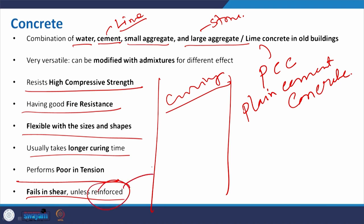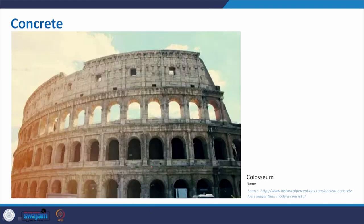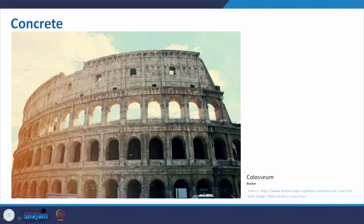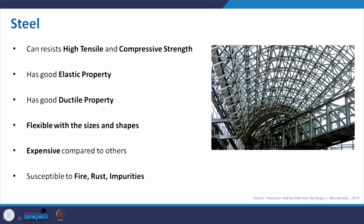One example of concrete in history is the Colosseum in Rome, and another great example is the Pantheon — a huge dome constructed with formwork and then concrete as the material. At that time, cement was not available in the modern form, but they still achieved it.